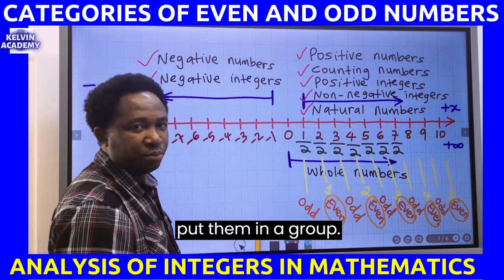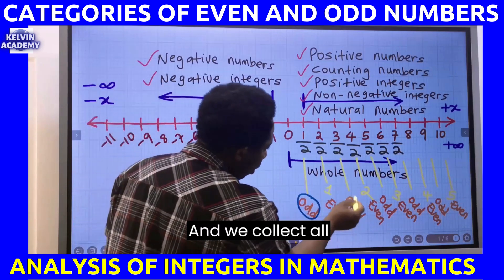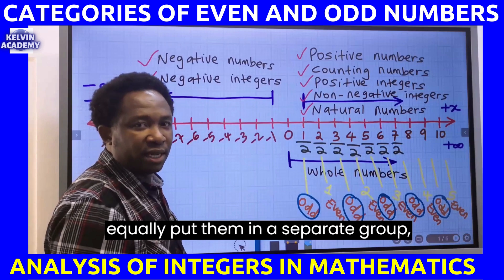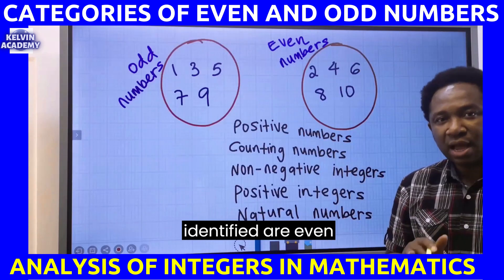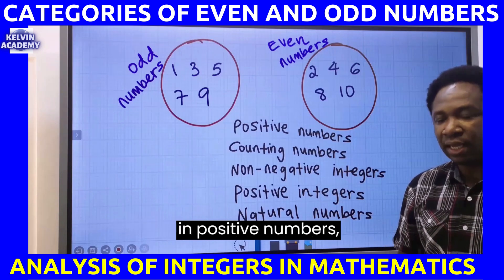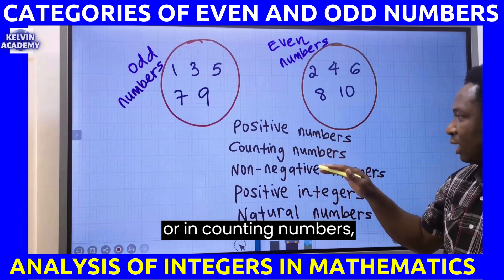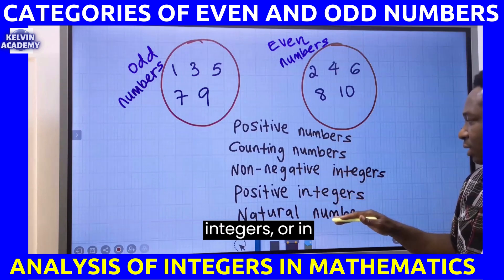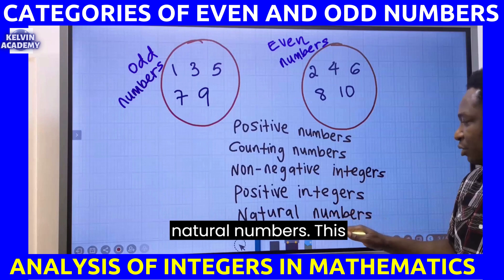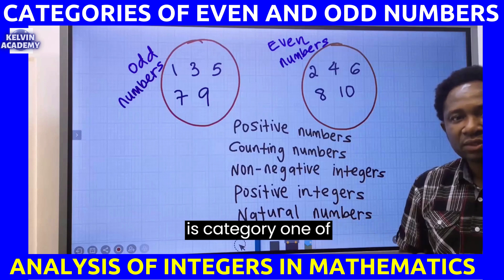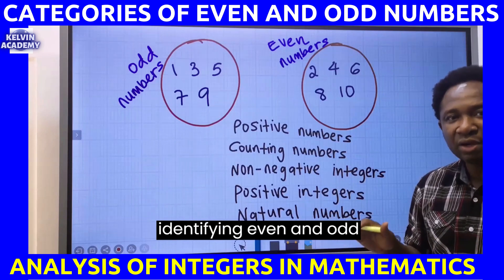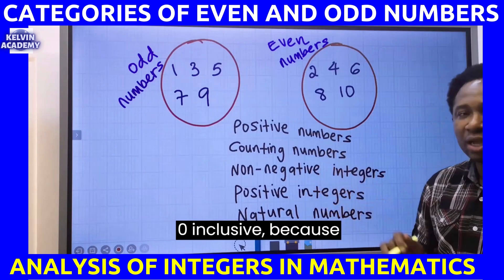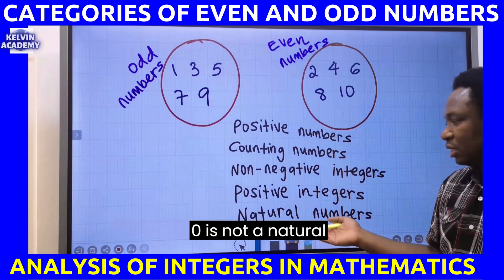If we pull the even numbers into a group and collect all the odd numbers into a separate group, what we have identified are even numbers and odd numbers in positive numbers, or counting numbers, or natural numbers. This is Category One of identifying even and odd numbers in integers. Note that in this grouping zero is not included, because zero is not a natural number.